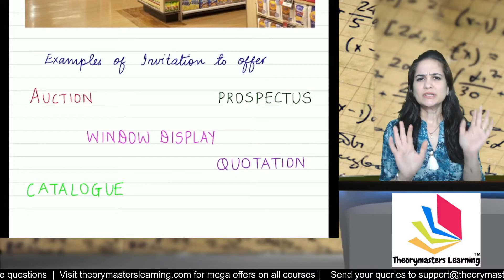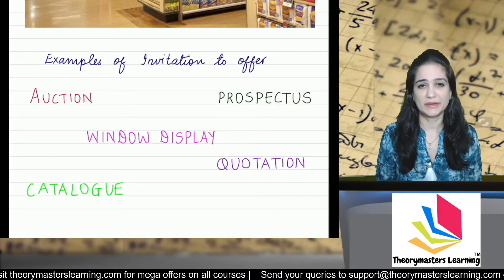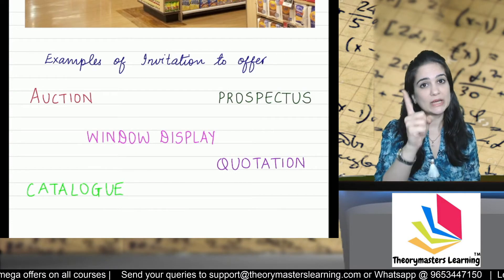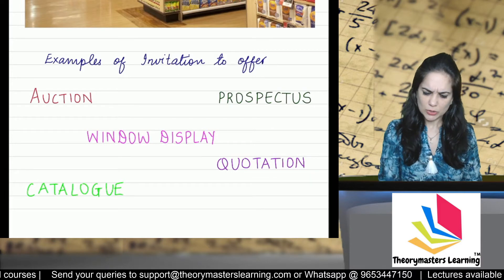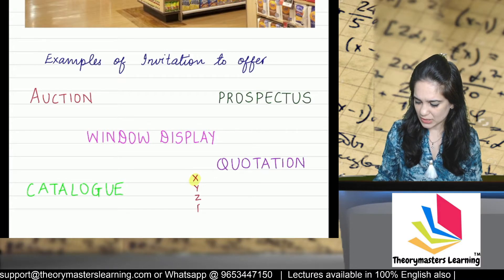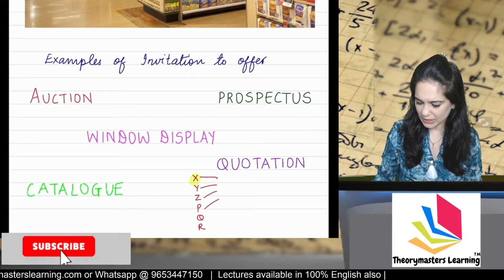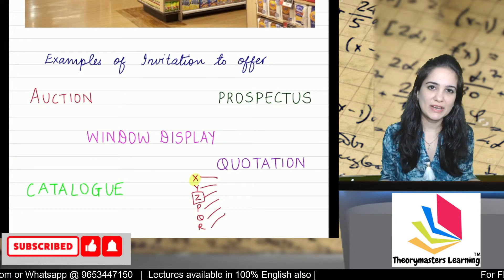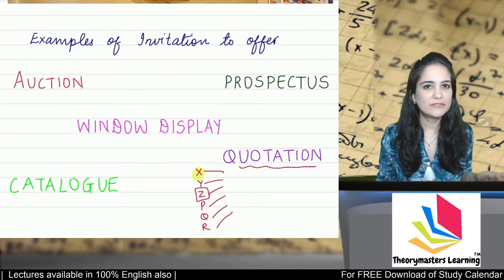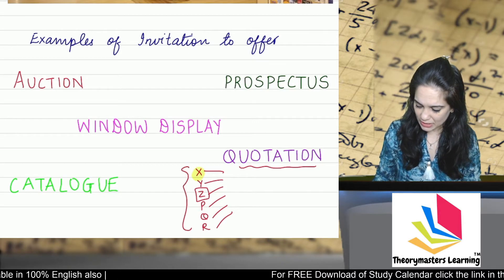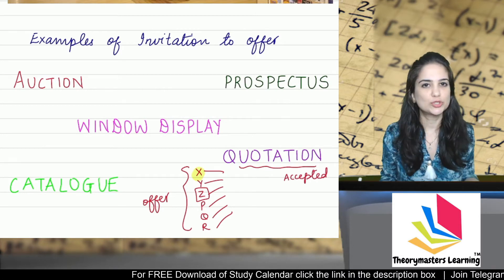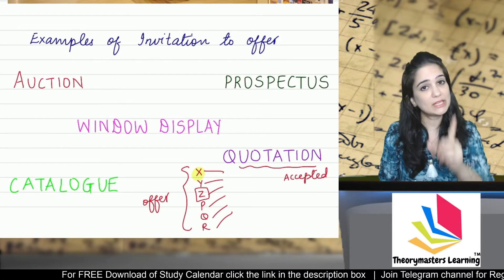Quotation — suppose I need to buy one lakh cement bags. I call multiple suppliers and say: I need one lakh cement bags; tell me the best price at which you can supply. So suppliers X, Y, Z, P, Q, R all give their prices. I found Z's price best, so I accepted Z's offer. So when we ask for quotations, that is invitation to offer. The suppliers give the offer, which is accepted by the company — and then the contract is formed.